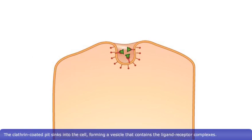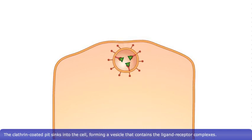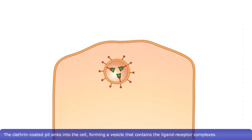The clathrin-coated pit sinks into the cell, forming a vesicle that contains the ligand-receptor complexes.